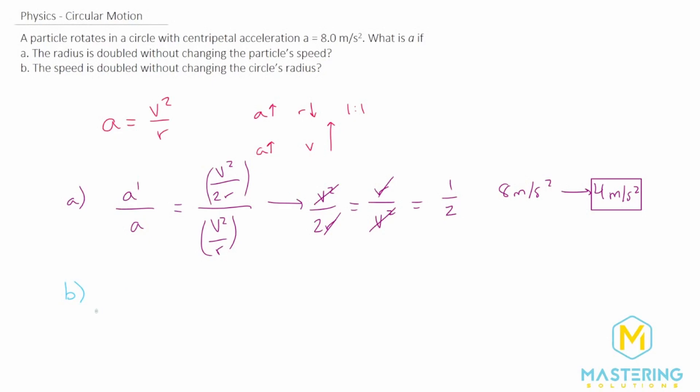For part B, we'll do the exact same thing, only now we're doubling the velocity without changing the radius.